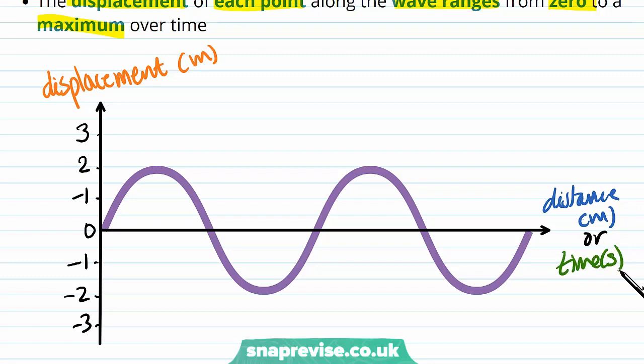We can use either a displacement-distance graph or a displacement-time graph to see this. We put displacement on the y-axis in both cases, measured in metres. On the x-axis, we can either have distance in metres or time in seconds, and in both cases we actually get the same graph shape showing how the displacement of the wave varies.